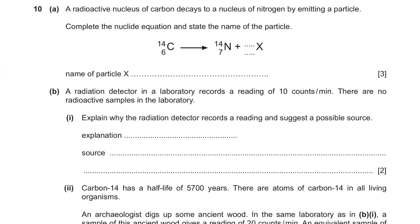Question 10, Part A: A radioactive nucleus of carbon decays to a nucleus of nitrogen by emitting a particle. Complete the nuclear equation and state the name of the particle. 14 became 14, so x has mass number 0. 6 became 7, so x should have atomic number negative 1. The name of particle x — with mass 0 and charge negative 1 — is a beta particle. Part B: A radiation detector records 10 counts per minute with no radioactive samples present. This is because of background radiation — radiation emitted from random objects like rocks and the ground, or present in air and food.